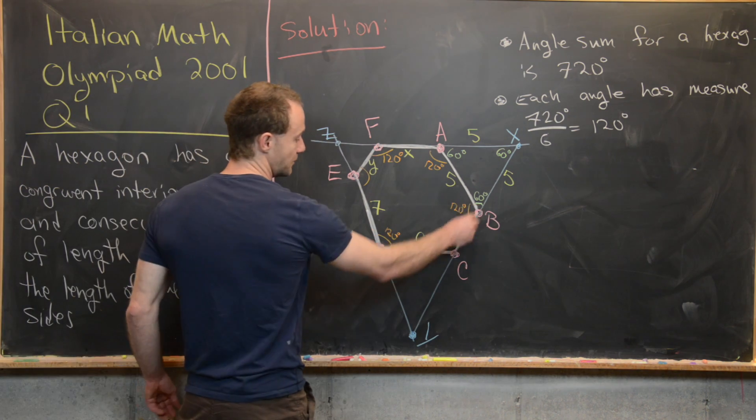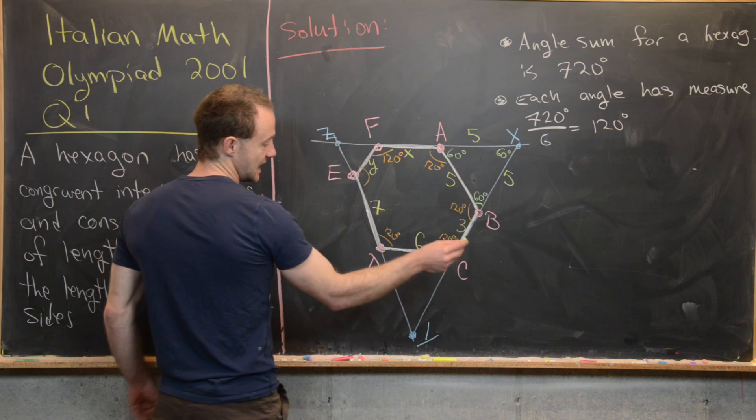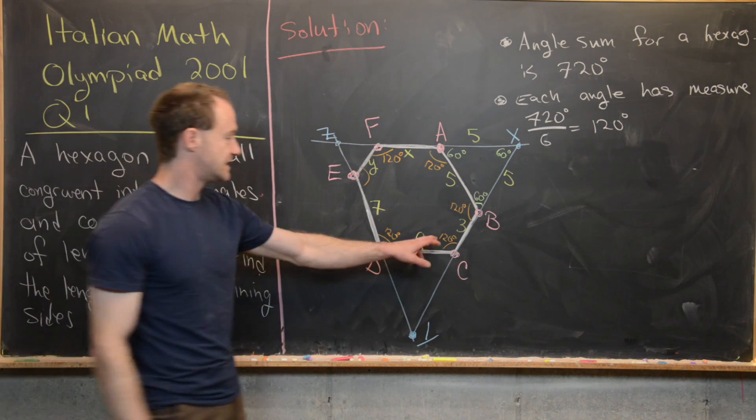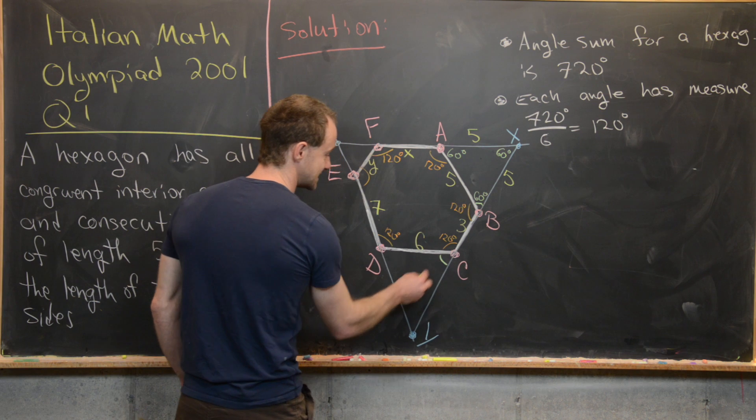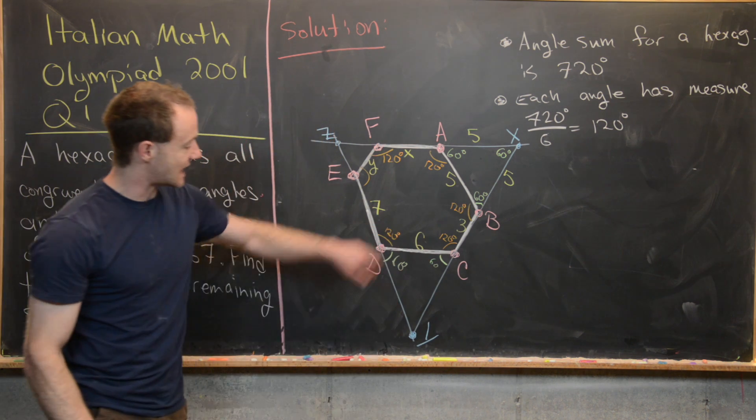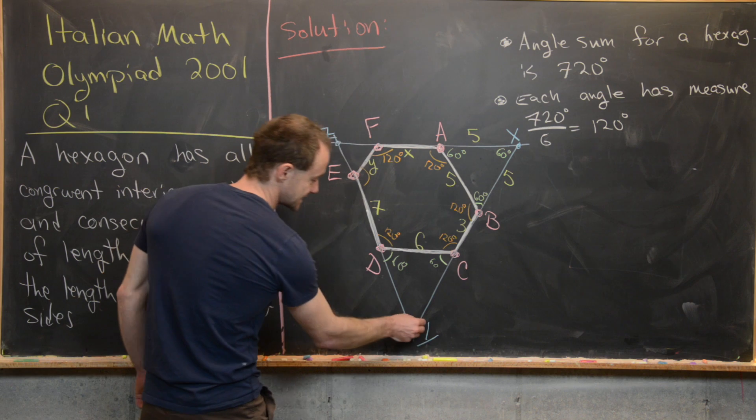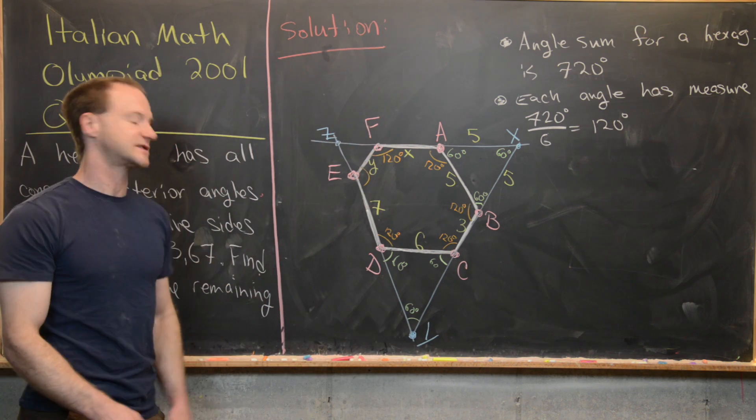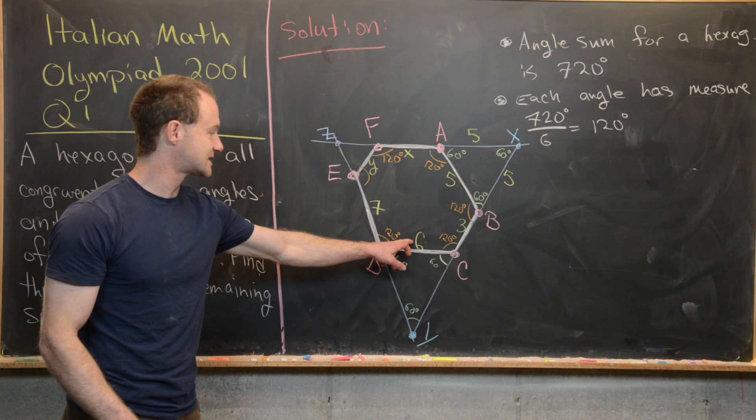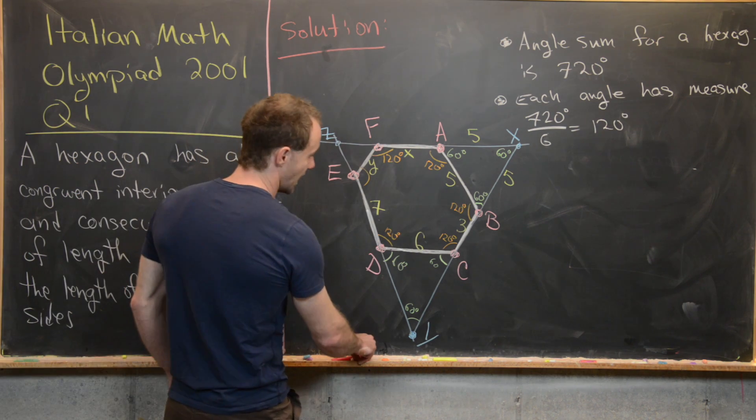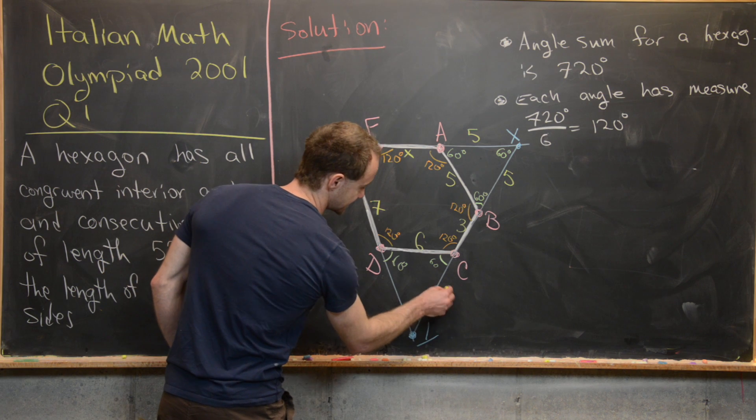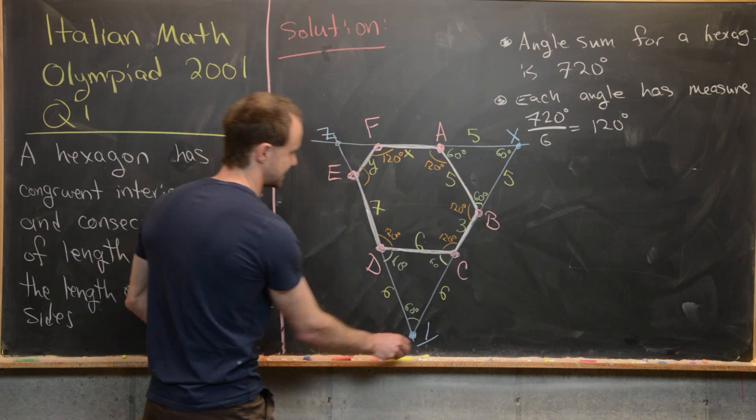So notice that angle BCD and angle DCY are supplementary. This is 120, so that makes that 60. That's going to make that 60. Kind of playing the same game over on that side, that's going to make this 60 as well. Again, by the angle sum for a triangle, we know this side length is 6, but that's going to make these last two side lengths also 6. So I'll go ahead and write a 6 there and a 6 there.